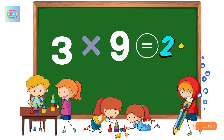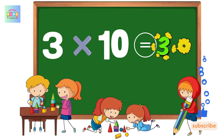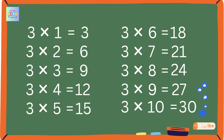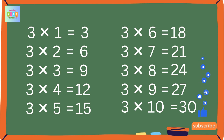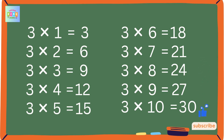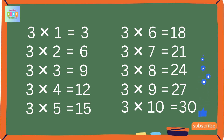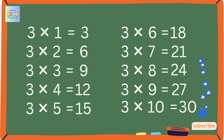3 10s are 30. 3 1s are 3, 3 2s are 6, 3 3s are 9, 3 4s are 12, 3 5s are 15, 3 6s are 18, 3 7s are 21, 3 8s are 24, 3 9s are 27, 3 10s are 30.